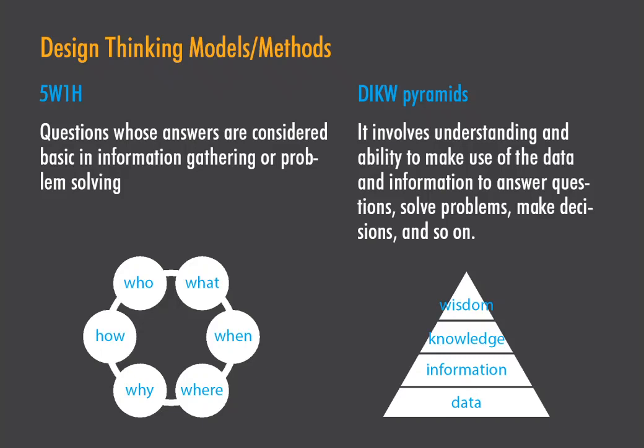Let's continue with more interaction design models and methods. That is 5W1H: Who, What, When, Where, Why, and How. When do we use this model? To design a good experience you have to understand people and their needs. How do we know what users want? The answers to these six questions reveal the context of use.